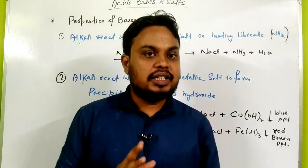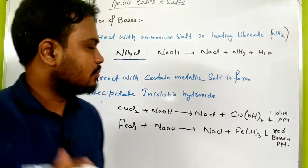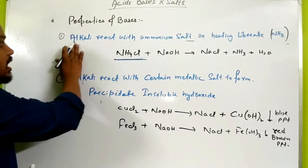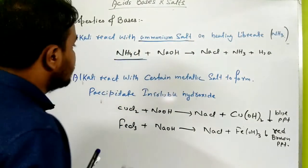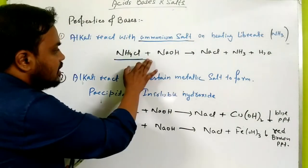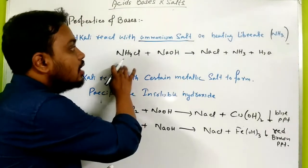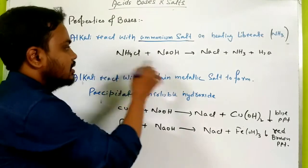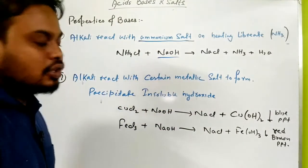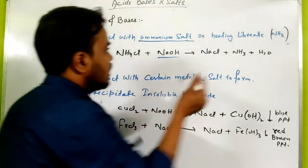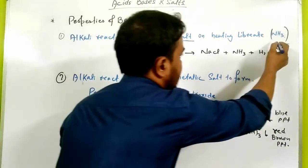Now we will look at the properties of base. The first property: alkali reacts with ammonium salt. Ammonium salt — for example, NH4Cl — when alkali like sodium hydroxide reacts with it on heating, it liberates ammonia gas.